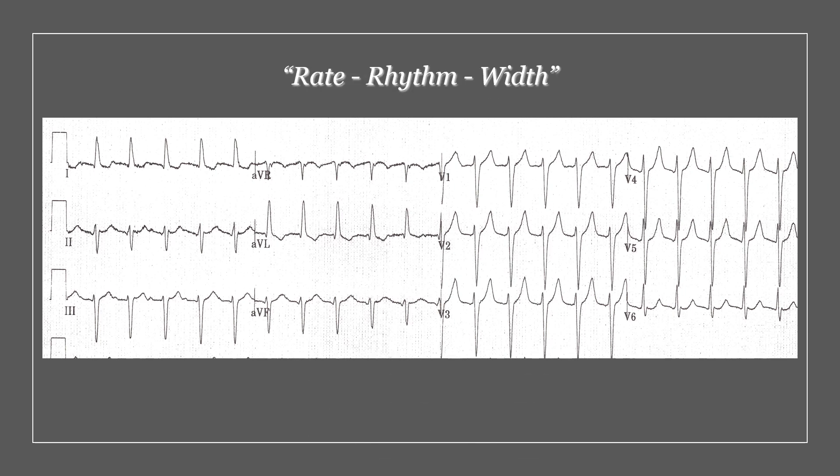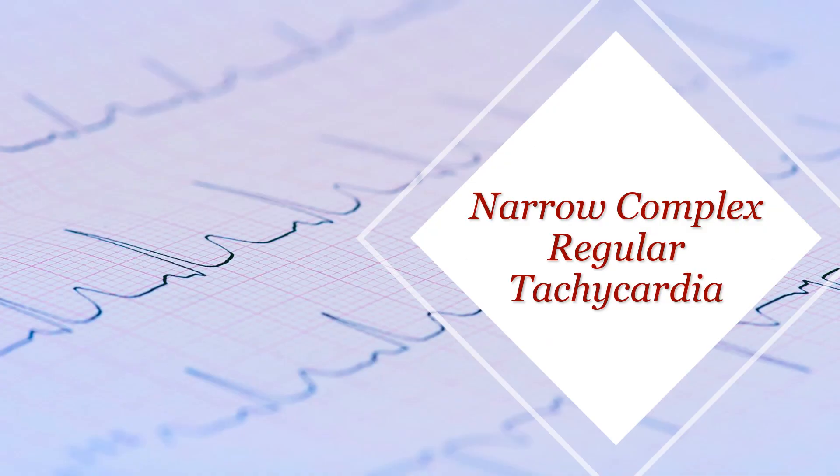Let's start with our first three questions: rate, rhythm, and width. In terms of the rate here, it was about 135 to 140 — so we are on the tachy side. In terms of the rhythm, this is a regular rhythm. And in terms of the width, that complex looks narrow. So in summary, we are dealing with a narrow complex regular tachycardia.